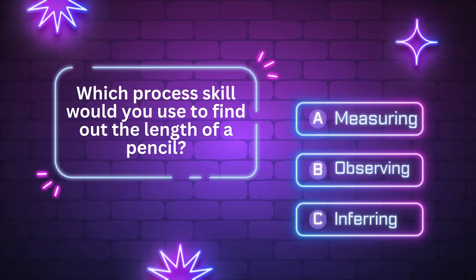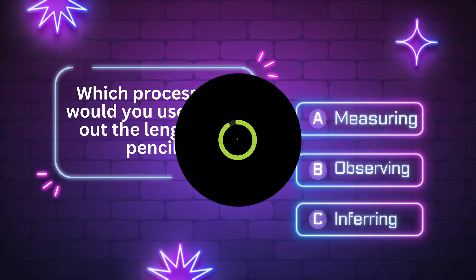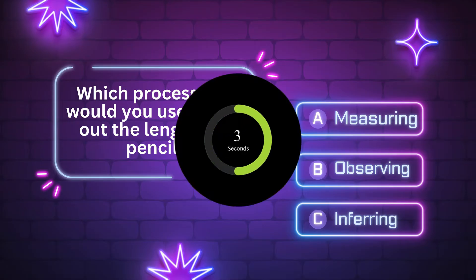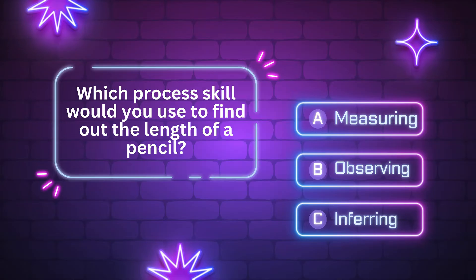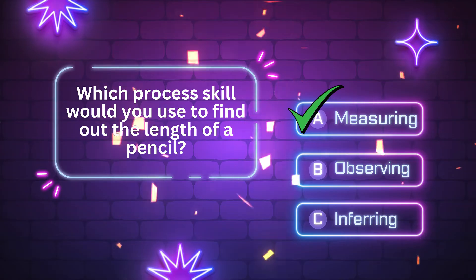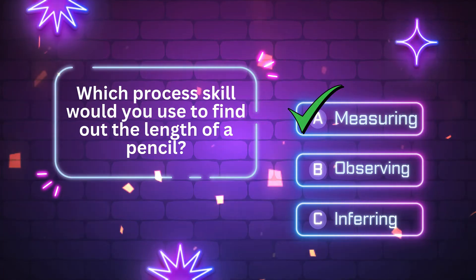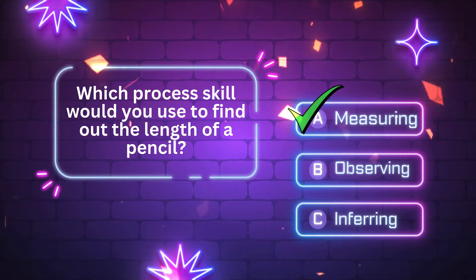Which process skill would you use to find out the length of a pencil? A. Measuring. B. Observing. C. Inferring. The answer is letter A. Measuring. Good job. Let's move on to the next question.